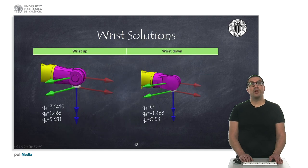Here I show these two configurations and the numerical values for each of the joints. If you take a closer look to the figures you will see that the link colored in magenta is actually rotated 180 degrees, which corresponds to the solution of q4.